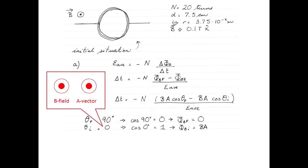Similarly, the initial angle between the magnetic field and the area vector is zero, because both vectors point in the same direction. The cosine of zero is one.